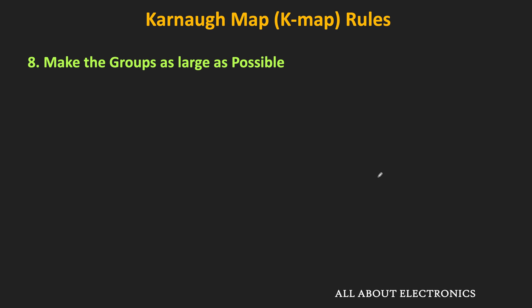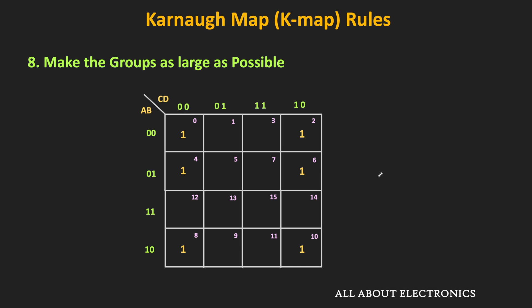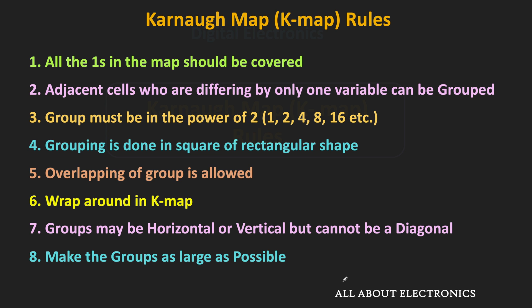The last rule is: during minimization, make groups which are as large as possible, and try to cover all the ones in the K map using the minimum number of groups. For example, in a K map where four ones can be covered by two smaller groups, it is better to make one group of four ones instead. Likewise, by combining minterms on the left and right edges and other groups, it is possible to cover all the ones using just two groups. These are the grouping rules for the K map, and using these rules it is possible to minimize any Boolean expression of two, three, or four variables.